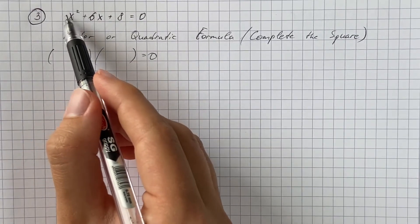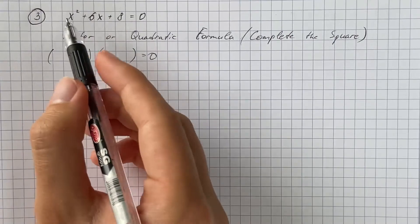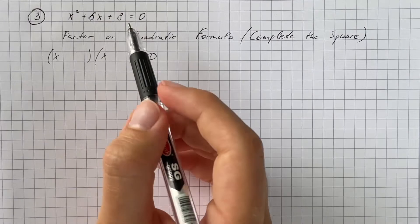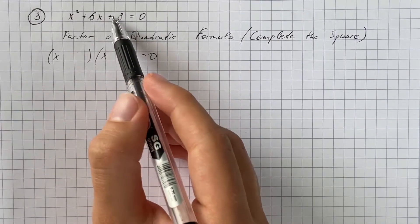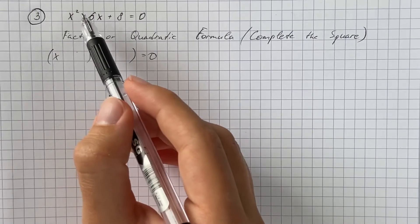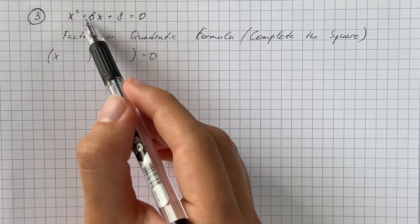Now we should look for two numbers that multiply to give us the constant, which is eight, but add up to the term involving x, which is six.